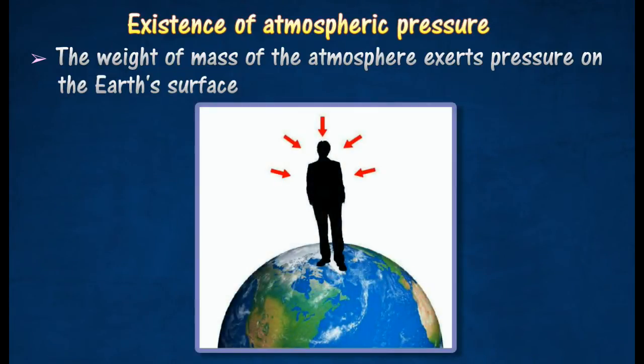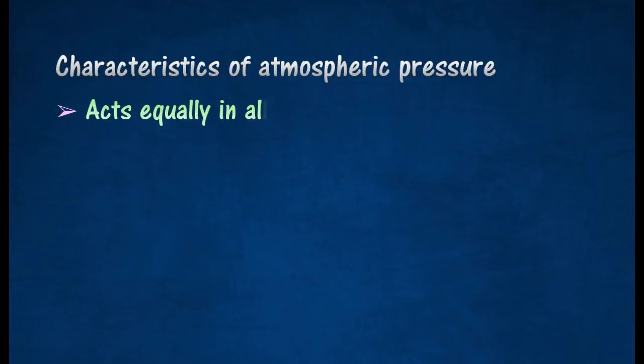The atmospheric pressure acts on every object on the Earth's surface. Atmospheric pressure acts equally in all directions and decreases with altitude.